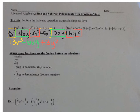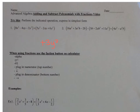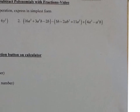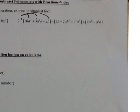Let's take a look at number 2. I see here I have a combination — a minus and a plus — so I have to make sure I distribute that negative. I'm going to rewrite the first parenthesis. Remember, there's really a 1 here; when I distribute the 1, everything's going to stay the same. So it's going to be 16a squared plus 3a squared b minus 2b.